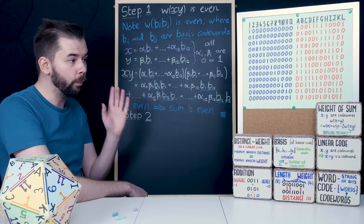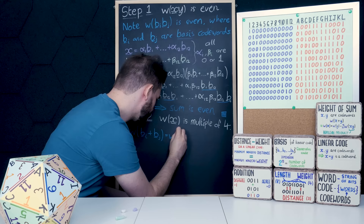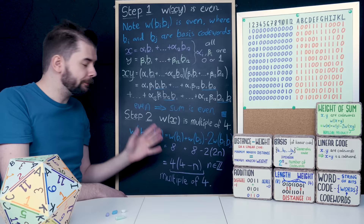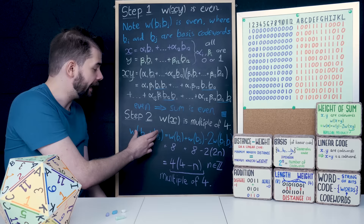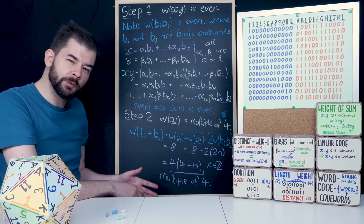Take two general codewords x and y, expressible as sums of basis codewords with coefficients zero or one. Taking their Boolean product, by distributivity we can rewrite this as a sum of Boolean products of basis codewords. All of these bi · bj are even as we showed, so we have a sum of even things which is even. With that finished, step two is to show that the weight of any codeword in here is a multiple of four — sometimes called doubly even. We can see just by looking at these basis codewords that they all have a weight of eight. In step one we showed that the weight of any Boolean product in this code is always even. Putting this all together and taking out the factor of four, that proves the weight of a sum of any two basis codewords is always a multiple of four.